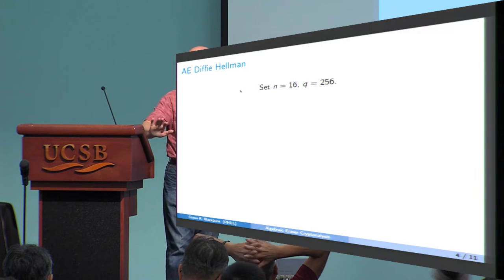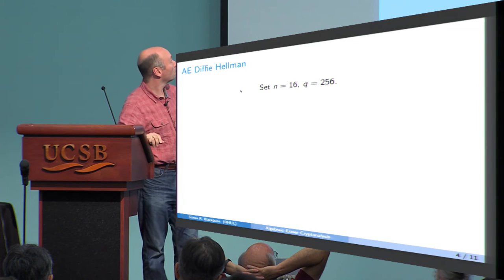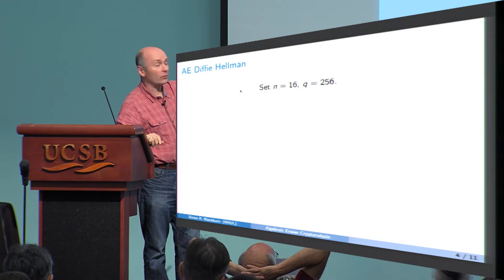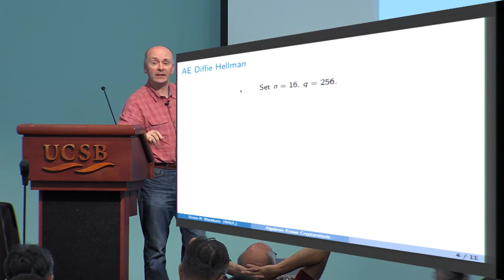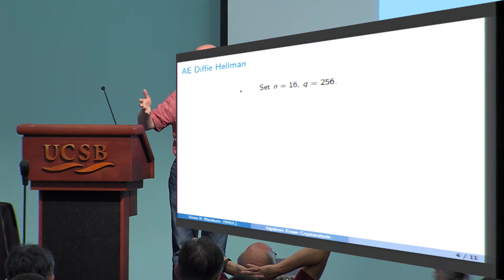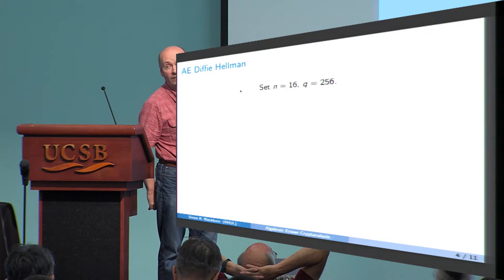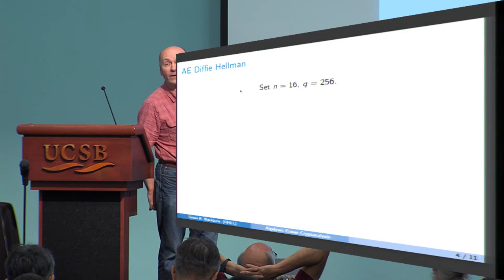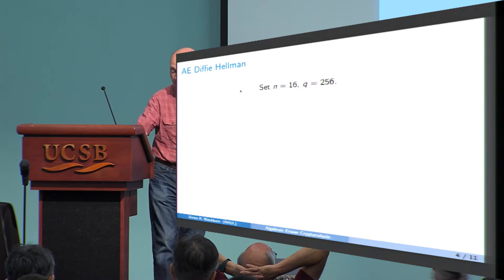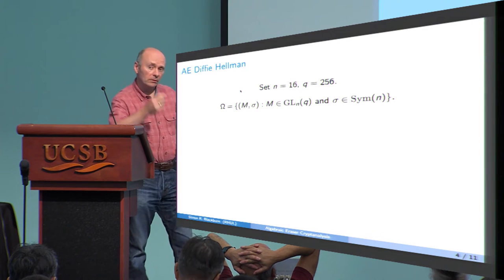So, algebraic eraser-Diffie-Hellman. It's a key agreement scheme, just like Diffie-Hellman, same kind of protocol flow. There are two parameters that are picked. First of all, for 128-bit parameters, we have N, which is 16. And these are N by N matrices. And Q is 2, 5, 6. Q is a field size. So these are 16 by 16 matrices, whose entries are elements of a finite field that just fits inside a byte. Eight bits.